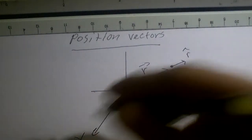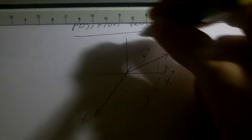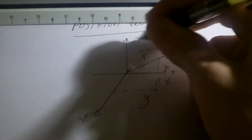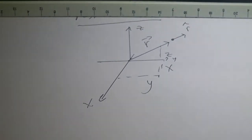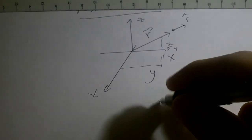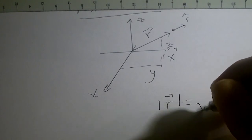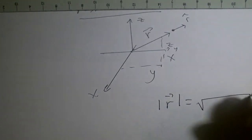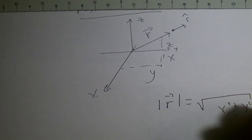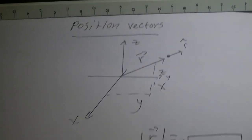So this is x, y, and z. The magnitude of r is just the Pythagorean theorem: x squared plus y squared plus z squared. The magnitude is the length.